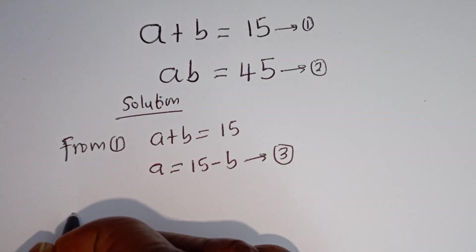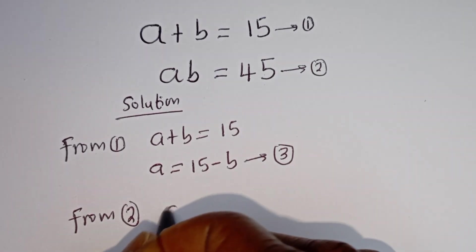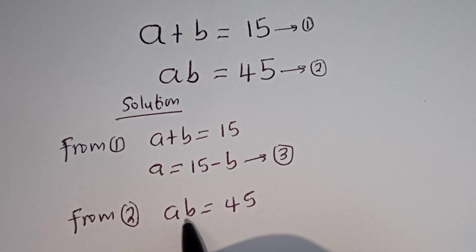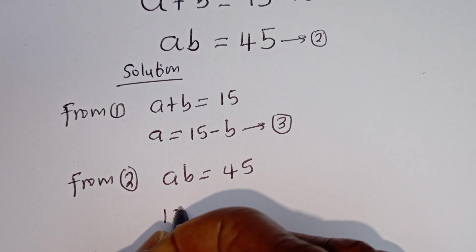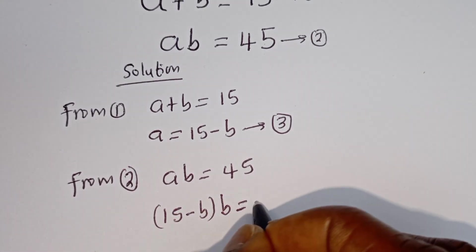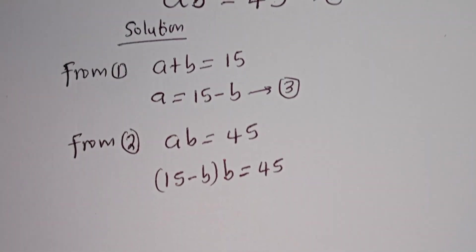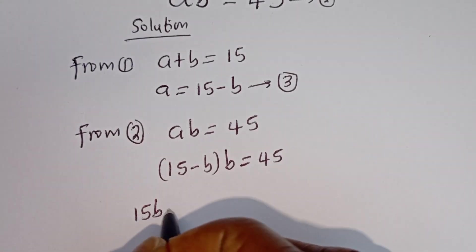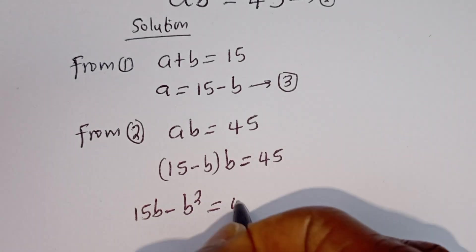From equation 2, AB is equal to 45. We can then substitute for A in this equation: (15 minus B) times B is equal to 45. Let's open the bracket: 15 times B is 15B, minus B times B is B squared, is equal to 45.